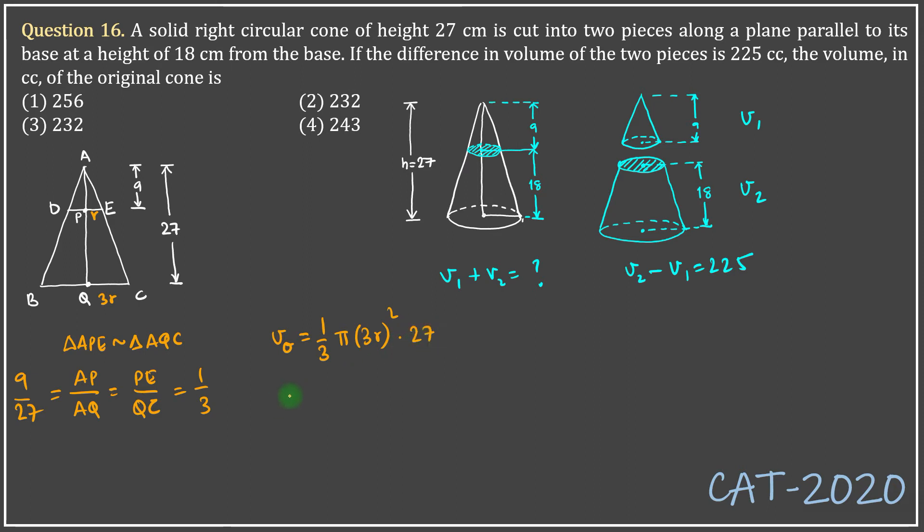And volume of the smaller cone v1 is 1/3 πr², which in this case is also r, r² h which is 9. So solving this I get 1/3 π(9r²)(27), that's 81πr²... and solving this I get 1/3 π r²(9), that is 3πr².